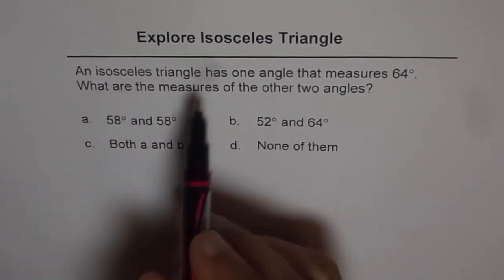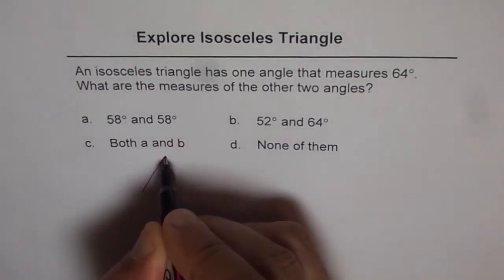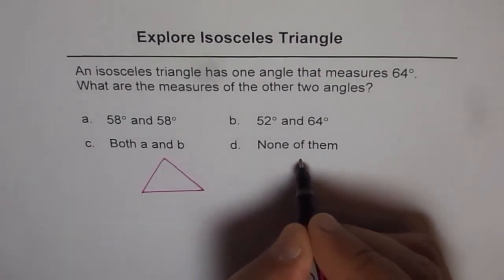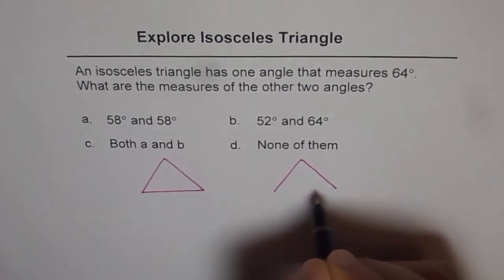We are given an isosceles triangle. That means we should draw triangles with the same two sides. So I'm drawing two triangles for the time being.